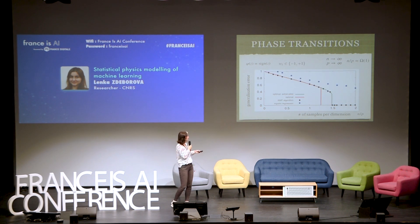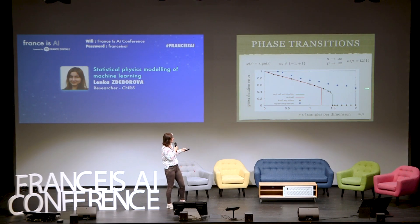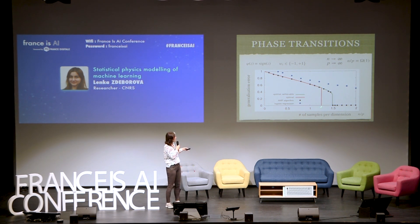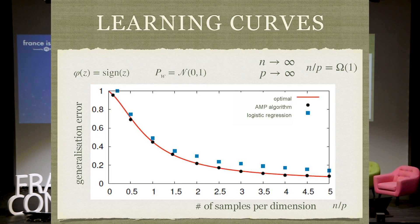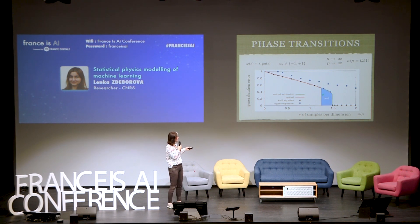But you can change things a little bit. Now you take the weights as plus-minus ones — why not, it's your model, you're just playing with your model. Now something interesting happens: not much changes with logistic regression, it gives basically the same generalization error as before. But the optimal curve jumps to zero at some point, and the algorithm we developed also jumps to zero, but a little bit later. The green line is the prediction for what the algorithm should be doing. You can observe that there is a gap between the current black-box general-purpose algorithms and the optimal ones, and also a gap between the best algorithm we think we have and the optimal ones.